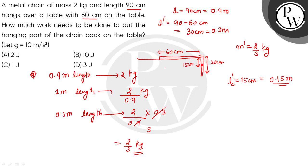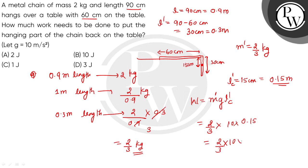So the work done to put this hanging part of the chain back on the table: W = M' × g × L'C. The value of M' is 2/3 kg, g is 10, and L'C is 0.15 m. This gives (2/3) × 10 × (15/100), which simplifies to 1 Joule.